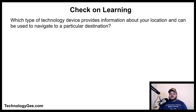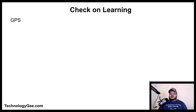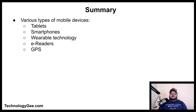Final question: which type of technology device provides information about your location and can be used to navigate to a particular destination? Is it GPS, e-readers, a headset, or a smart camera? The correct answer is GPS.